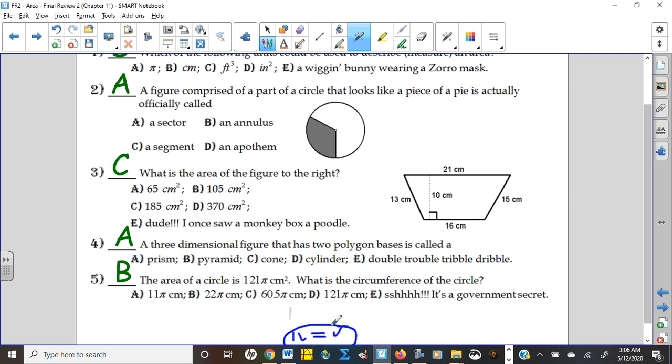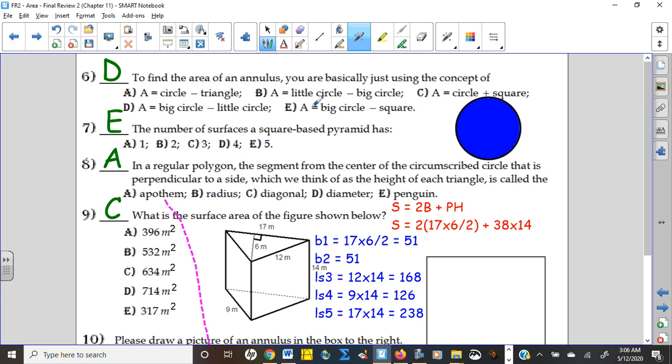When we do the formula for an annulus, basically what we're doing is we're taking the larger circle, which has a big radius, and then we're subtracting a smaller circle, like say this guy right, which has a smaller radius.